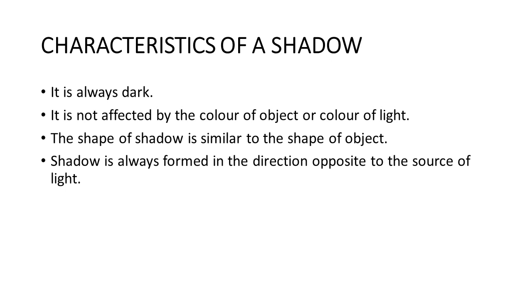The second one. The shape of shadow is similar to the shape of object. So, if in case we are using a circular object like ball, we will obtain a circular shadow. It is always formed in the direction opposite to the source of light.